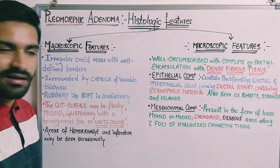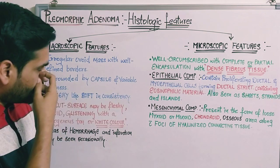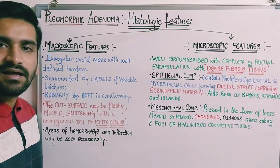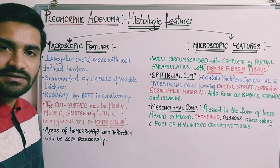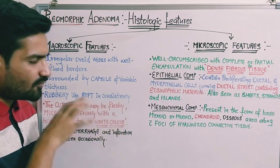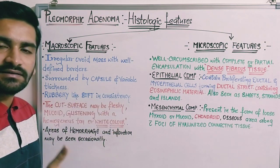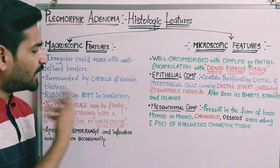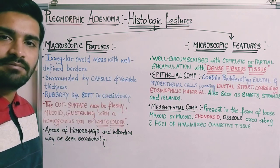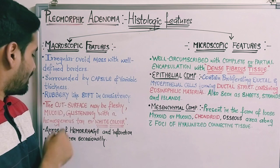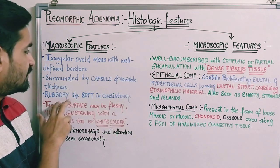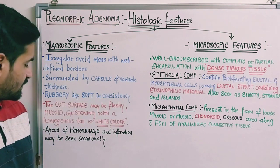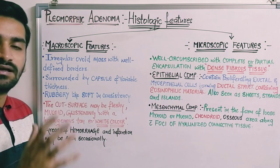The borders are very well-defined — you can easily demarcate between the lesion and the normal tissue. It is surrounded by a capsule of variable thickness, meaning the capsule will not have the same thickness all around.